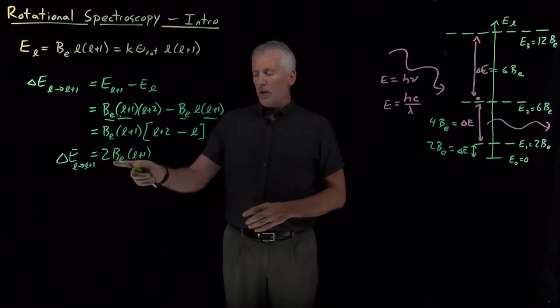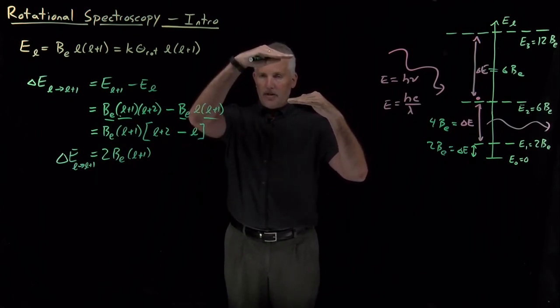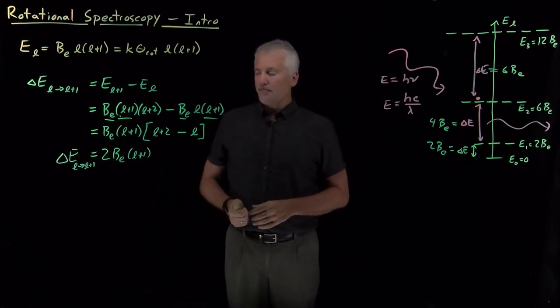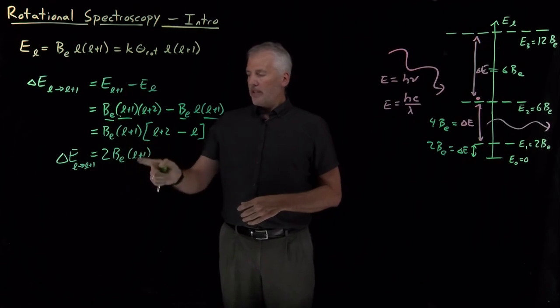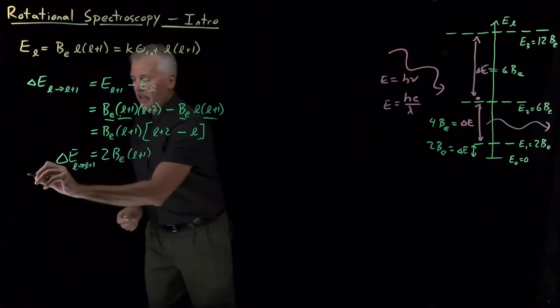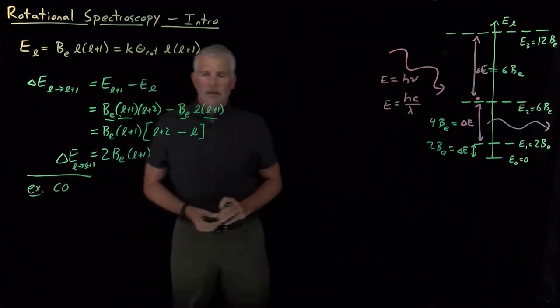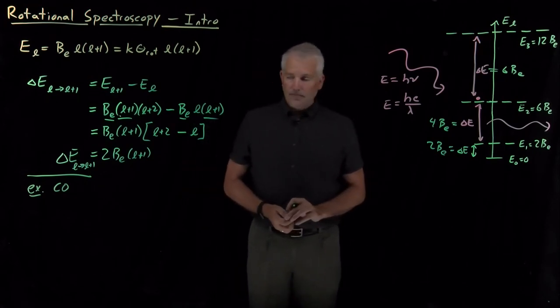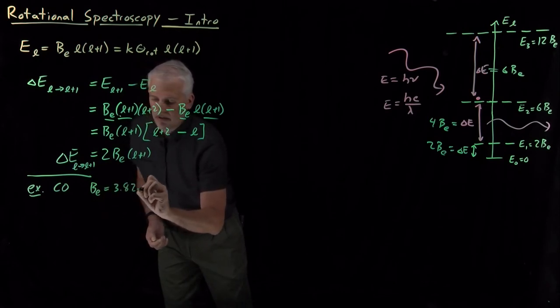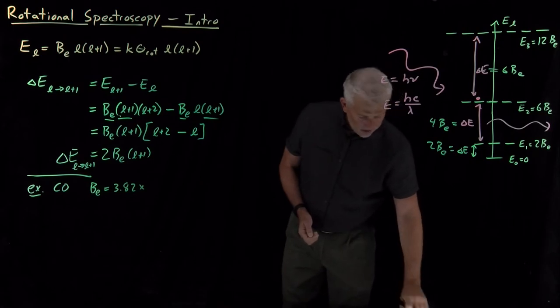So now if we want to know the gap between the 21st and 22nd energy level, it's just going to be twice the rotational constant times 22, the upper level. So that's enough to tell us what the gaps are. Let's go ahead and use some actual numbers, so let's ask again about the carbon monoxide molecule, for which the rotational constant is 3.82 times 10 to the minus 23rd joules.